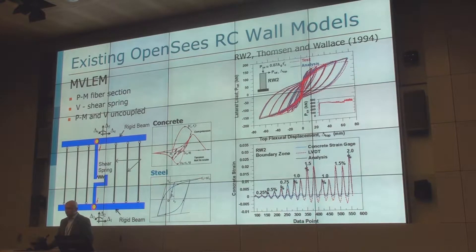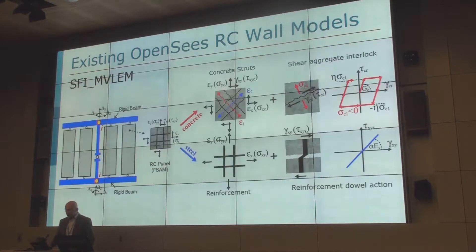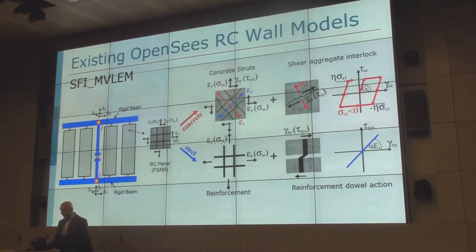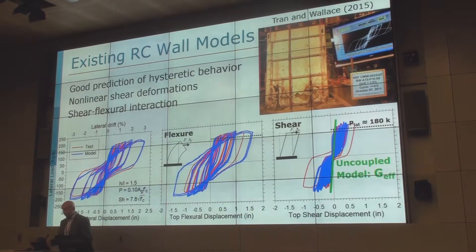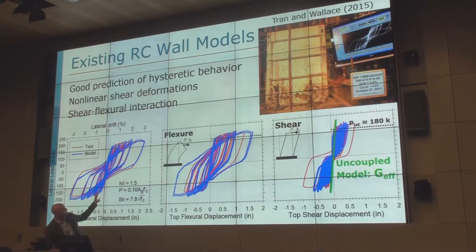It showed to work pretty well with flexure-dominant walls, such as RW2, for example, or any other similar walls. And we extended that element to a shear-flexure interaction version that implements a two-dimensional material model at each fiber level, so it captures the interaction between shear and flexure at the element level. We validated that one against a lot of tests, and it works pretty well.